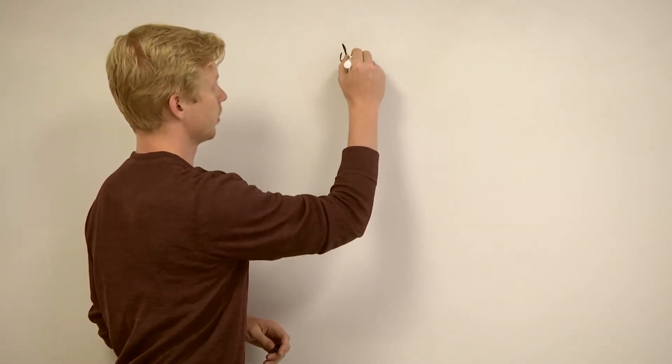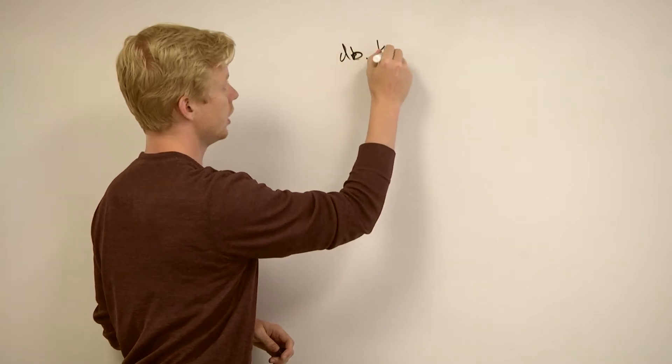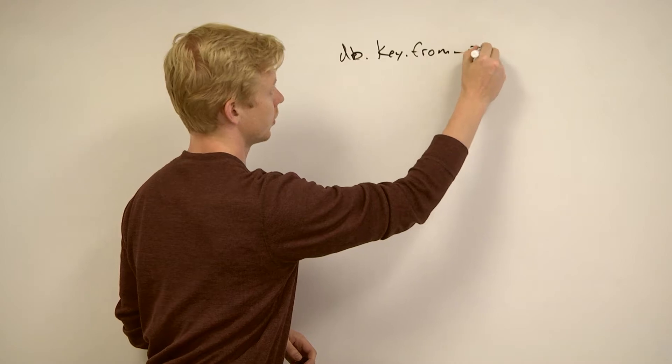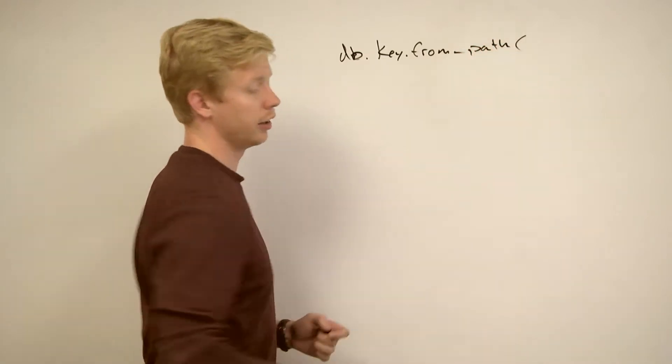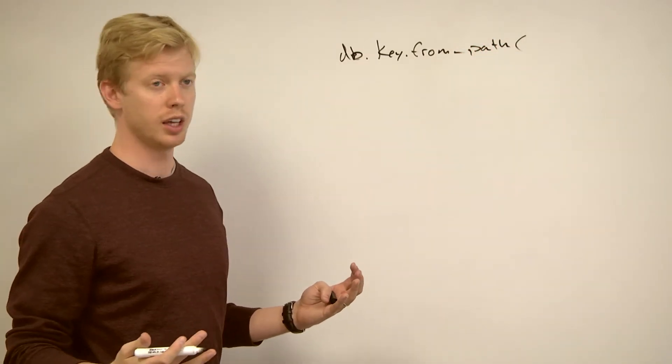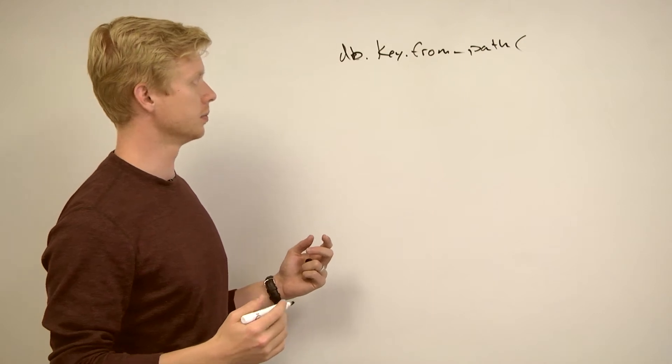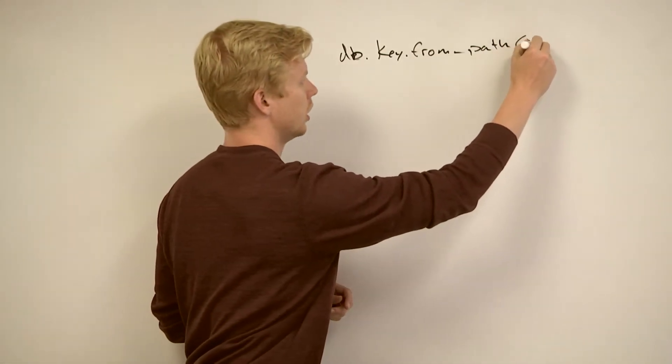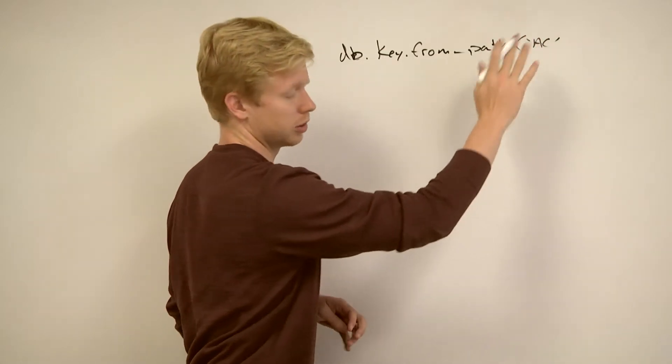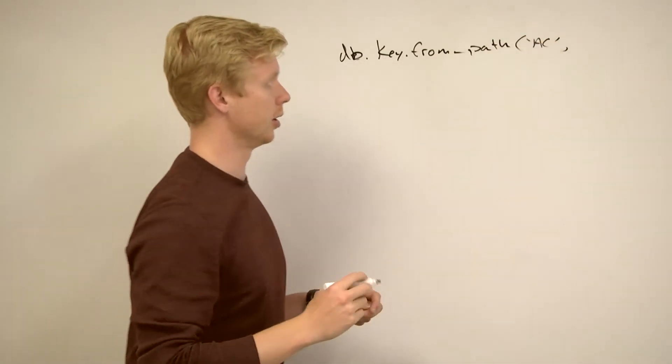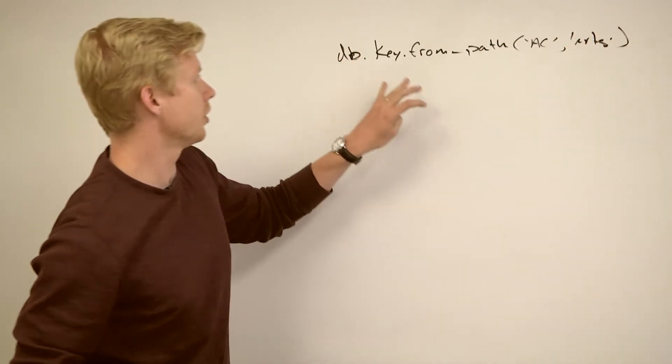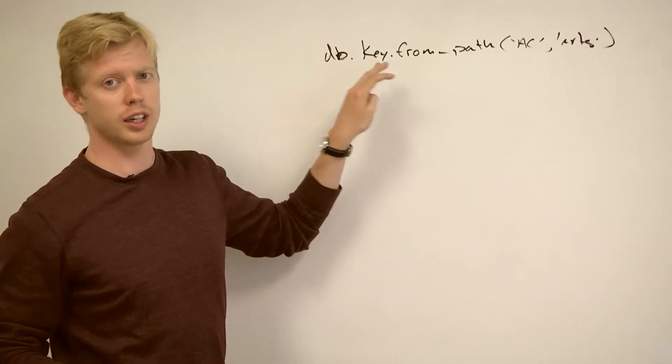So the question in the forums was about ASCII-chan in particular, and we had a line that looks like this: db.key.fromPath. FromPath can take a couple of parameters, actually as many as you want, but in this particular example I just used two. It said ASCII-chan, I'll just abbreviate it AC, and then I think I had the string arts.